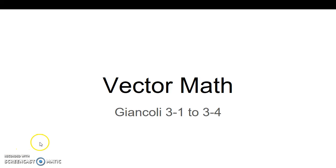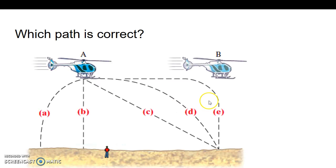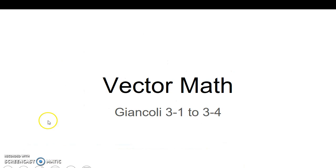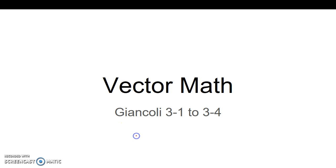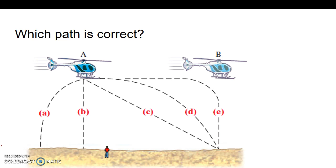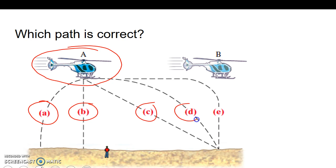Moving on, we will look at vector math and what that means. We're looking at this helicopter, which is dropping a package. This package is going to go one of five ways as the helicopter travels in that direction.